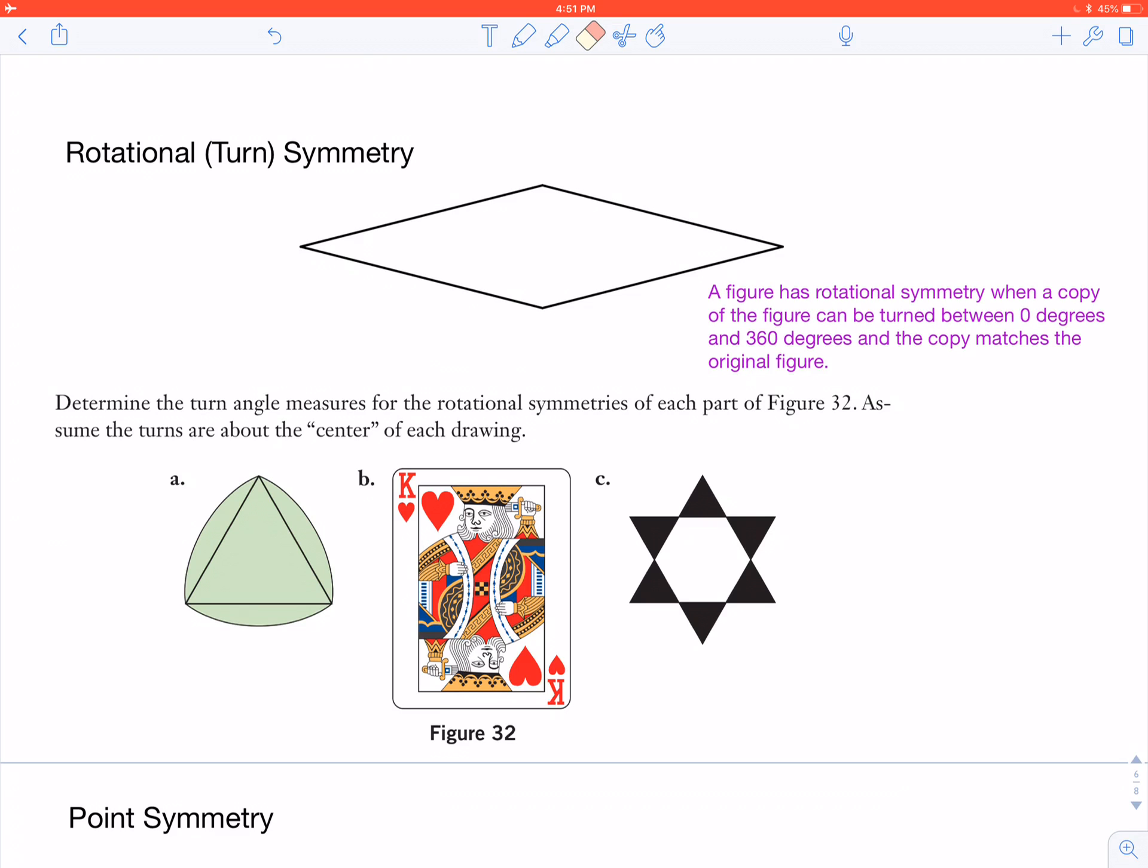So if you can imagine turning this particular figure, starting to rotate it somewhere between 0 and 360 degrees, and you get the exact same figure back. This particular figure, if you rotate it until it's upside down, it's the exact same figure as it was when it started.